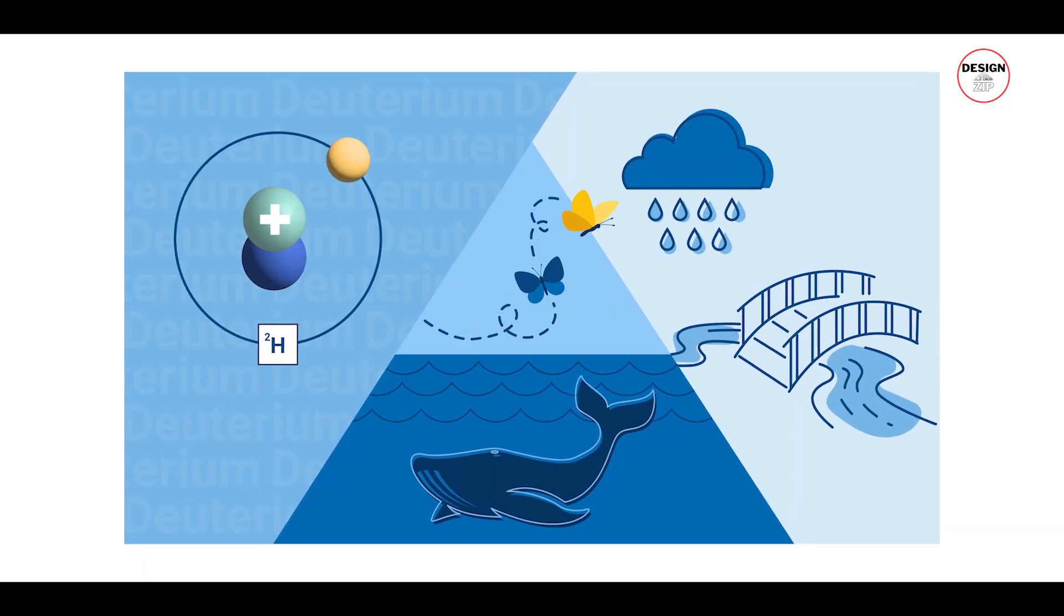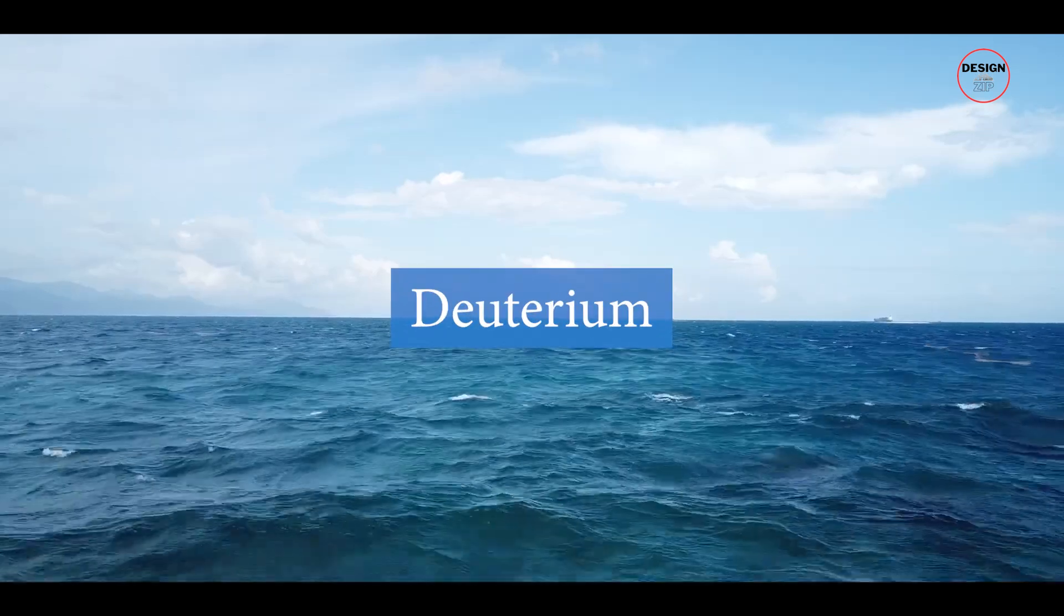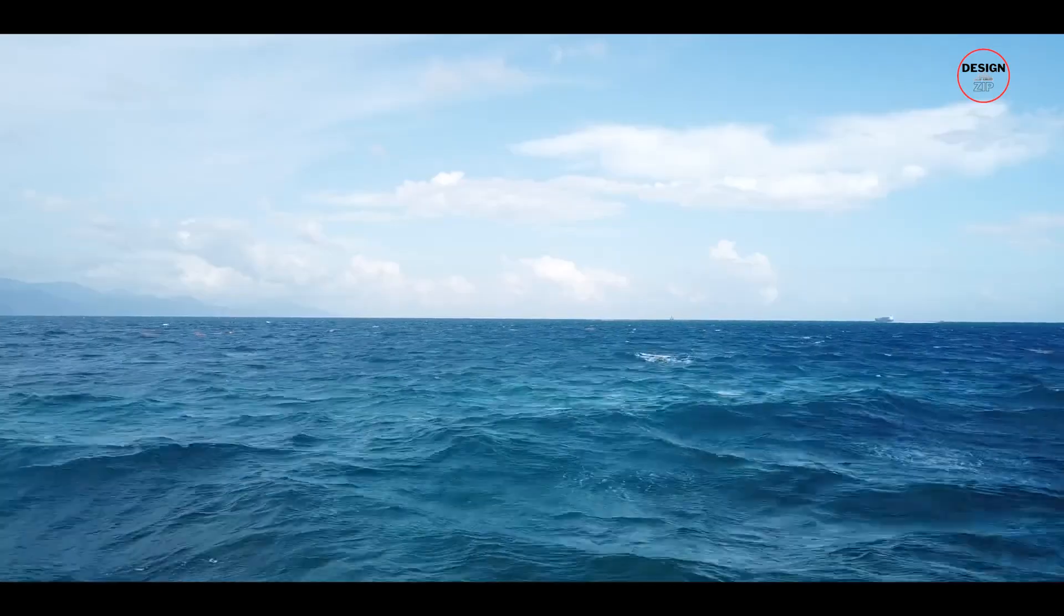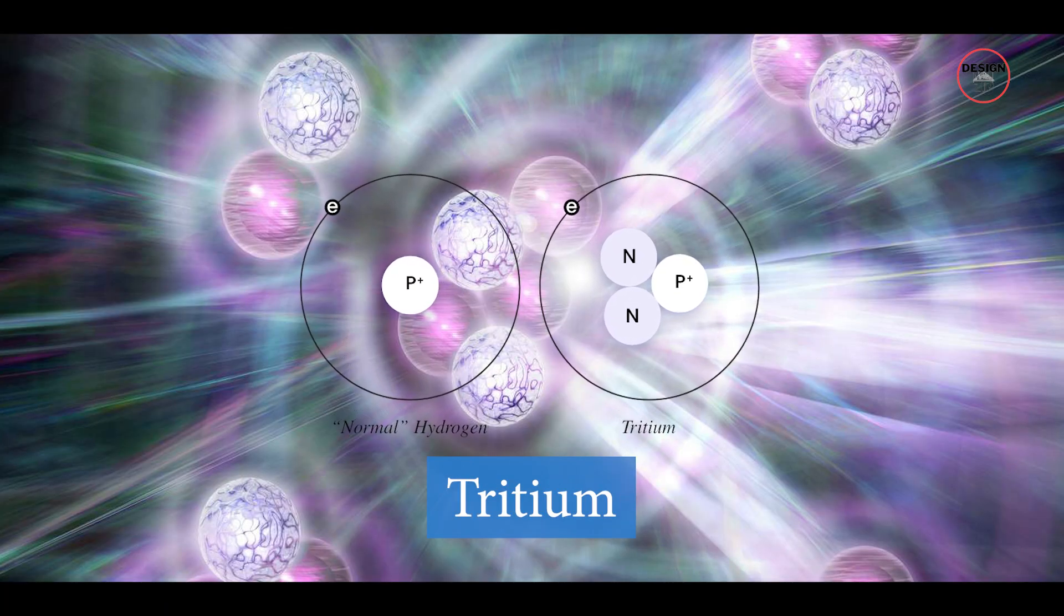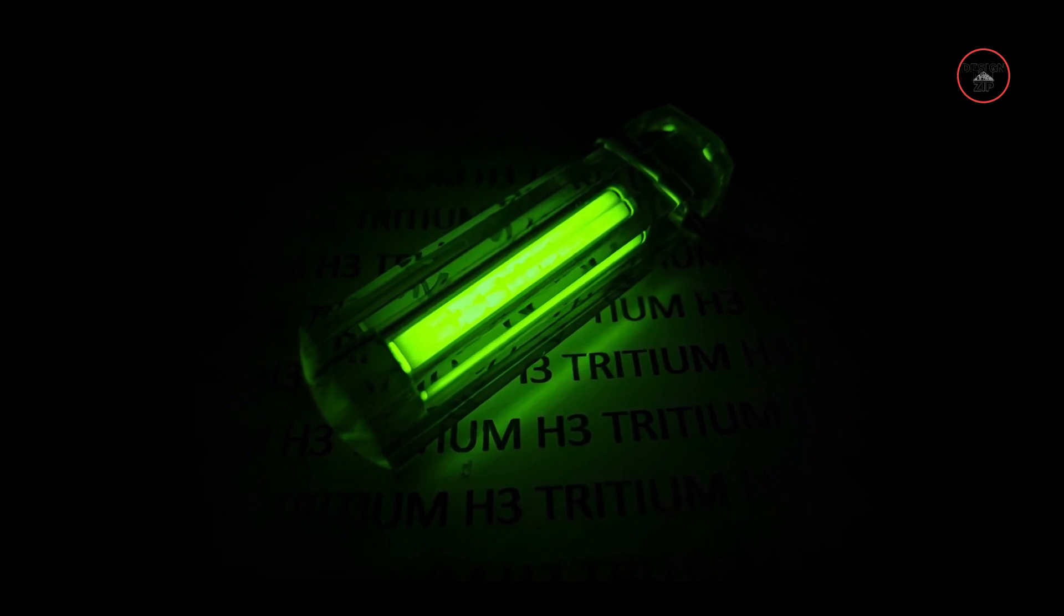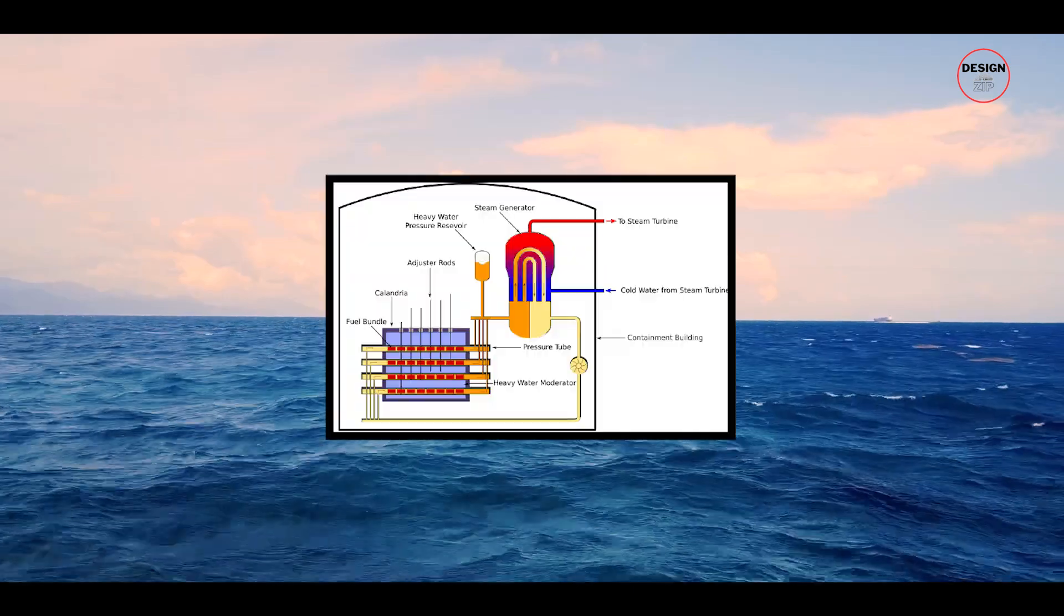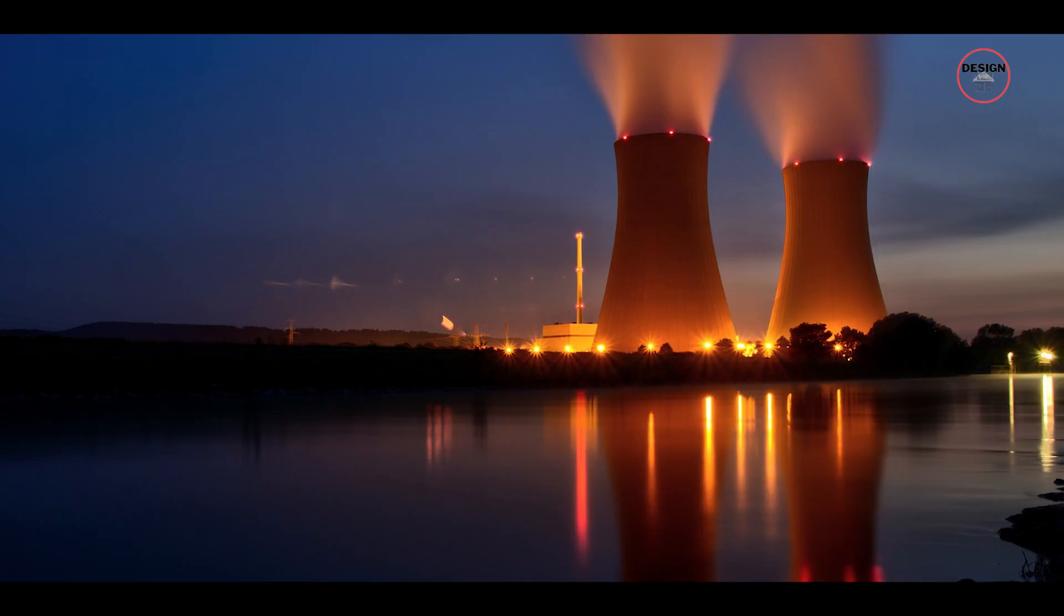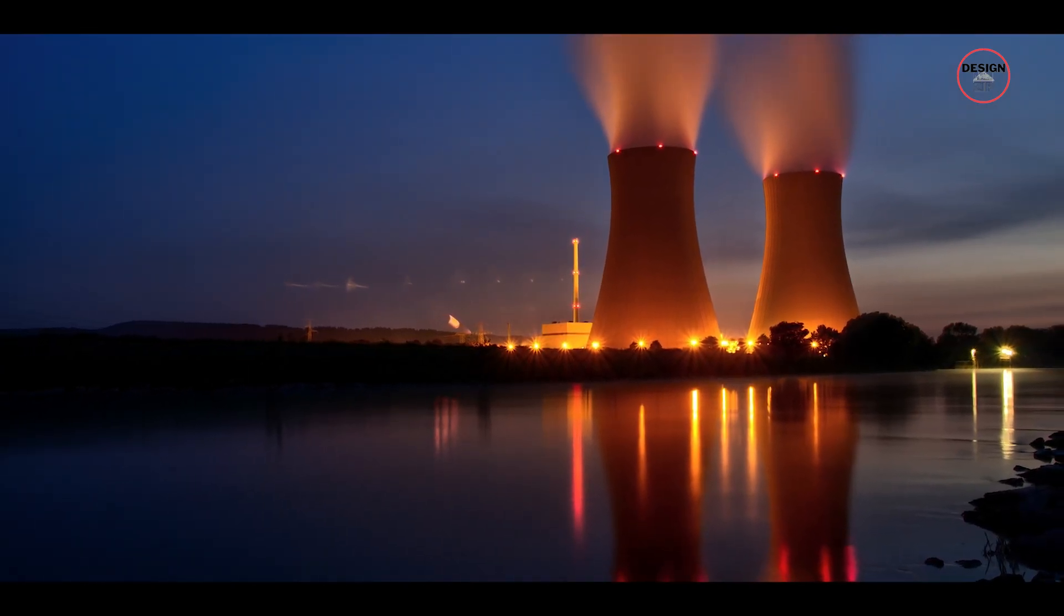So where do scientists get this fuel? Deuterium is readily available and can be extracted from seawater, making it nearly inexhaustible. Tritium, on the other hand, is much rarer. It occurs only in trace amounts in nature, and the world's current supply, primarily produced by heavy water candu fission reactors, is only about 20 kilograms per year. This is nowhere near enough for future fusion power plants.